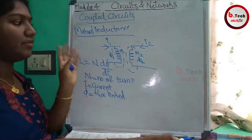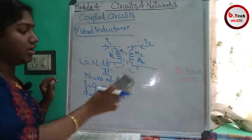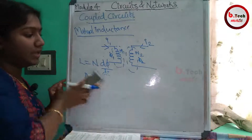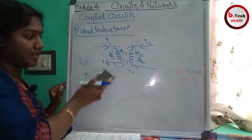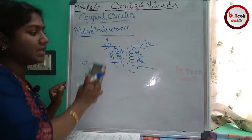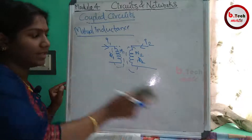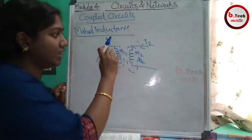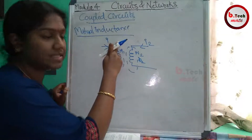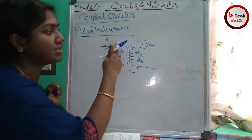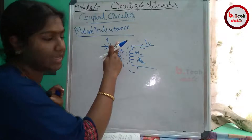Now, i1 and i2. These are two coils. At the base of coil 1, we have current i1. When the current i1 changes, there is a change in flux.